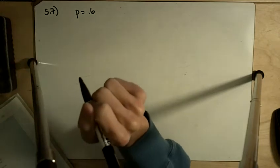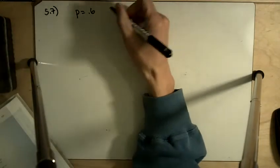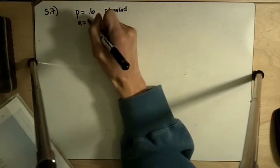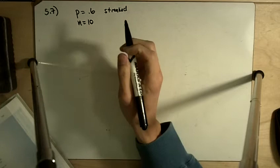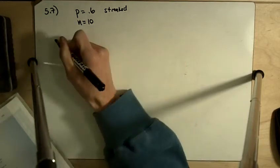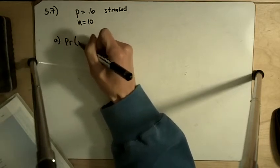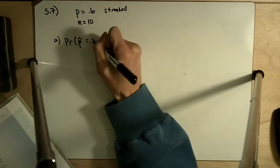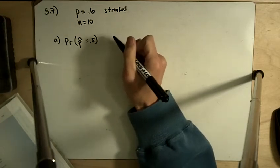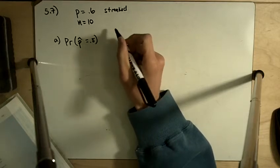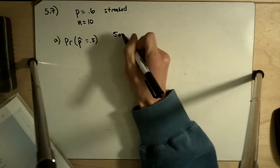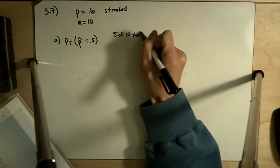Suppose a random sample of 10 snails is to be chosen from the population. So 0.6 are streaked, and our sample size is 10. We're choosing 10 snails, and we want to know P hat, which is the sample proportion of streaked snails. Part A asks, what is the probability that P hat equals 0.5? P hat equals 0.5 means the proportion of our sample that's streaked is 0.5, meaning 5 out of 10 shells are streaked.